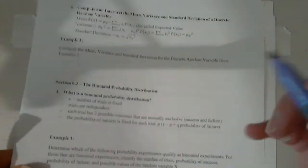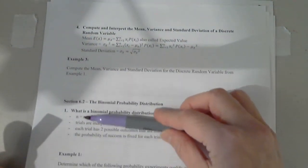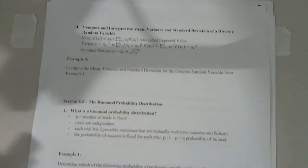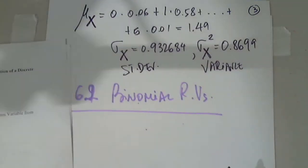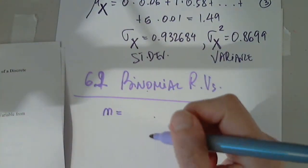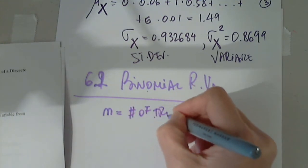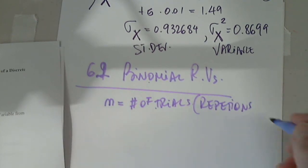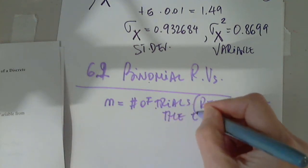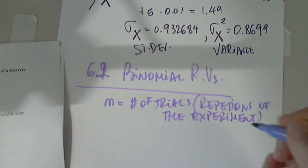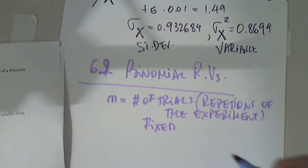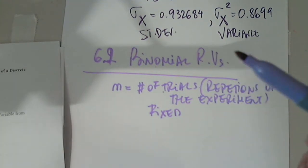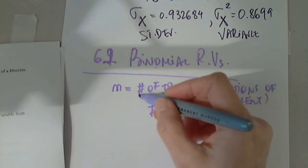Binomial random variables have to fulfill these four conditions. If any of these conditions fails, it's not a binomial probability distribution. Or it is not a binomial random variable. Number one, n is number of trials. It's a fixed number. Number of trials. What is a trial? Repetition. Repetitions of the experiment. This has to be fixed. If you say today, I'm going to repeat the experiment five times, and tomorrow 10 times, and the next day 15 times, it's not a binomial random variable. You have to have a fixed number of trials.